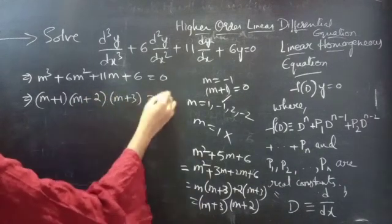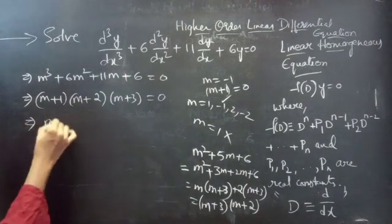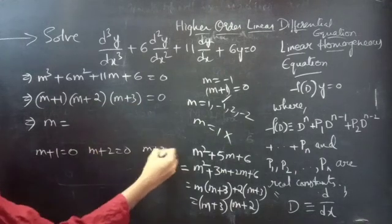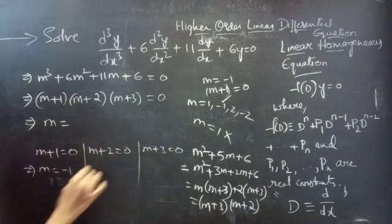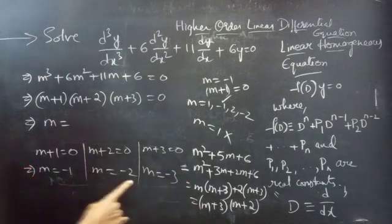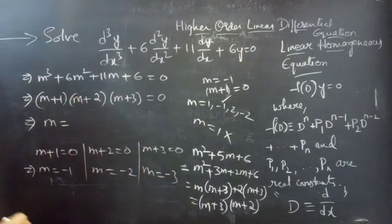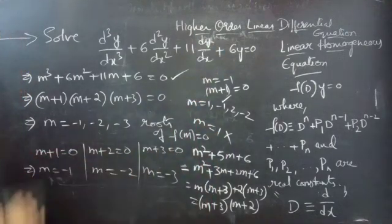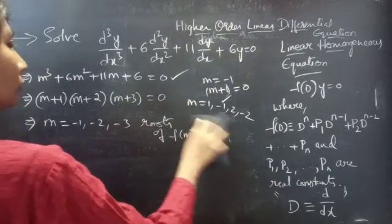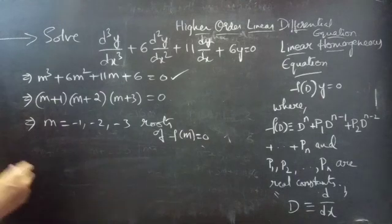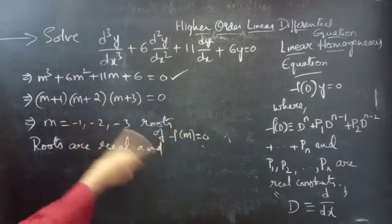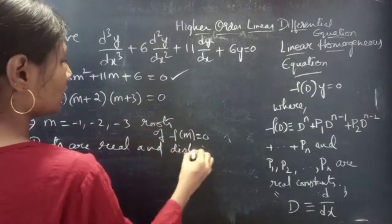From the factors, setting each equal to zero: m + 1 = 0 gives m = −1; m + 2 = 0 gives m = −2; m + 3 = 0 gives m = −3. The roots of the auxiliary equation are m = −1, −2, −3. The roots are real and distinct — there are no repeated roots.